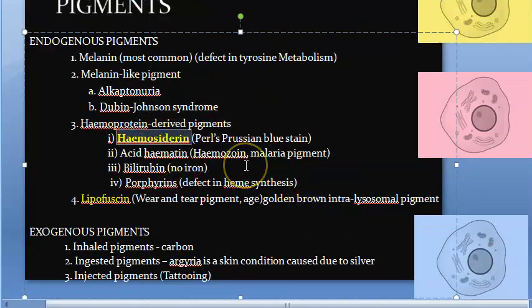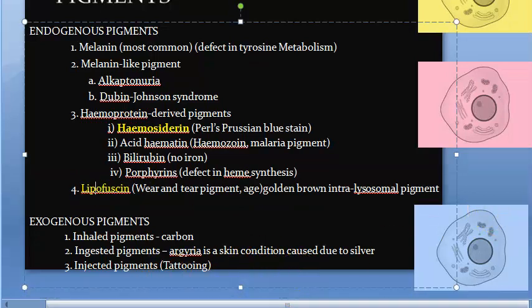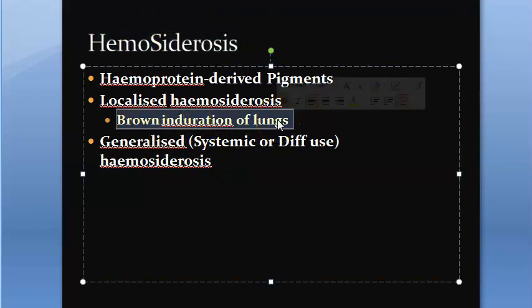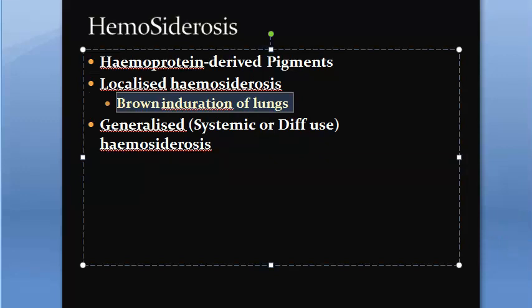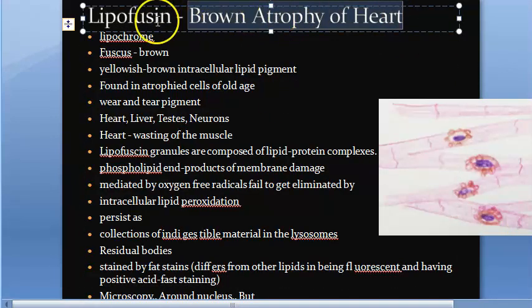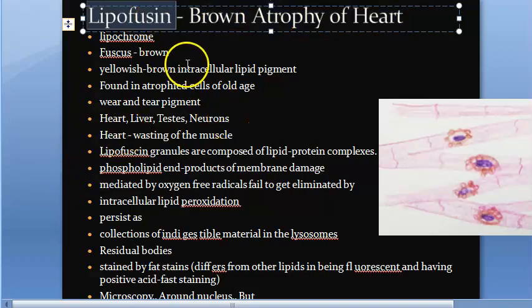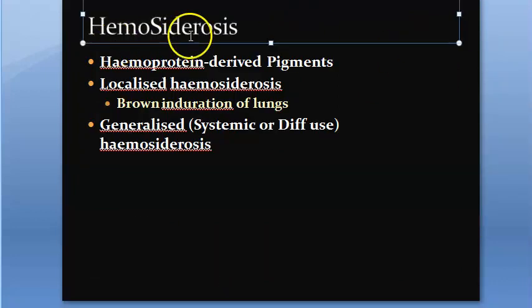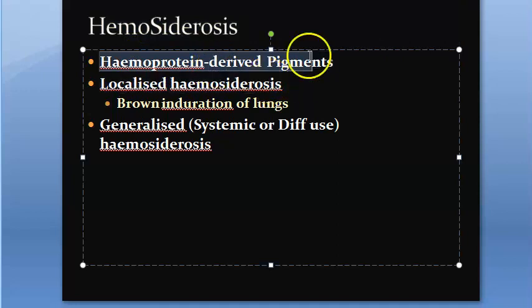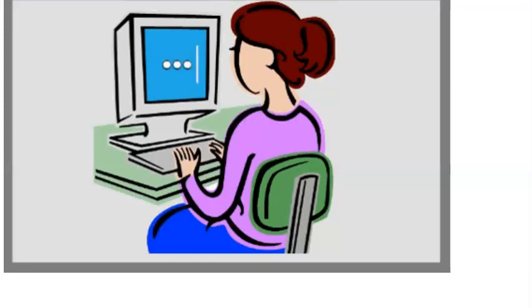Whenever they ask about the lung — brown induration of lung refers to hemosiderosis, and that pigment is hemosiderin. Whereas brown atrophy of the heart will be lipofuscin. Hemosiderin comes because of breakdown of hemoglobin — it is a heme protein-derived pigment. So remember: in lung it will be hemosiderin; in heart it will be lipofuscin.